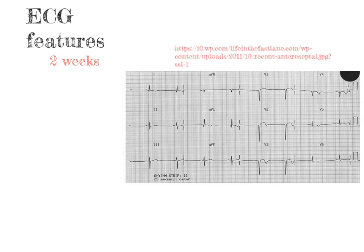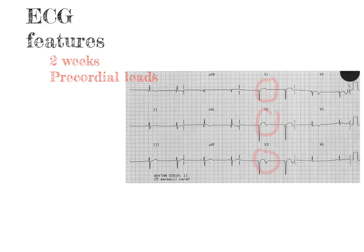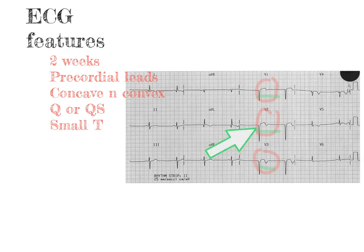What are the ECG features of LV aneurysm? You see ST elevation two weeks after MI, most commonly in precordial leads. You see both concave or convex morphology, associated with Q or QS waves. The T wave has smaller amplitude compared to the QRS complex. In STEMI, you see more hyperacute T waves. These features have a sensitivity of 38% and specificity of 84% for ventricular aneurysm.